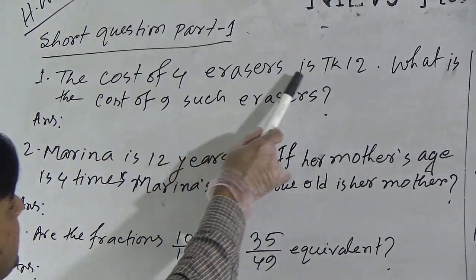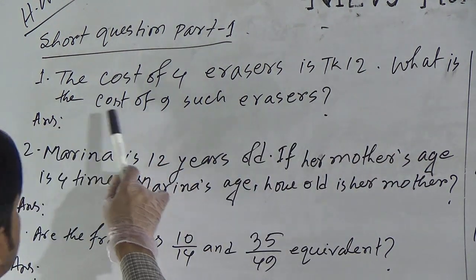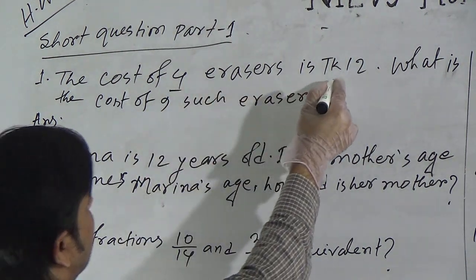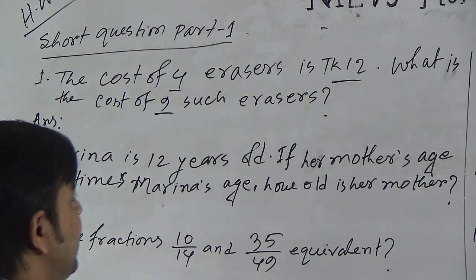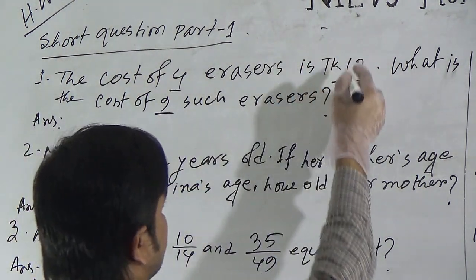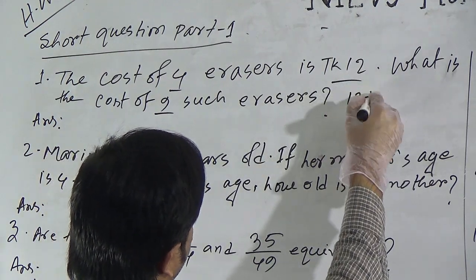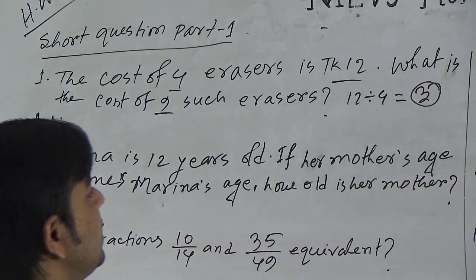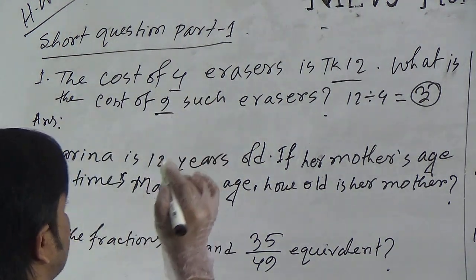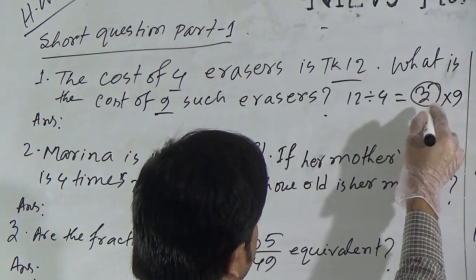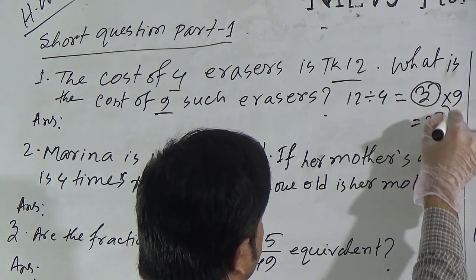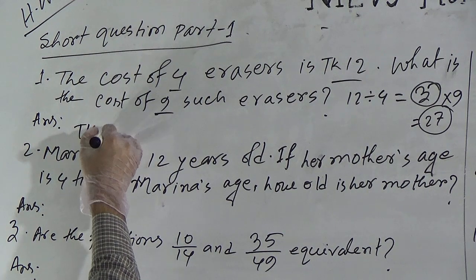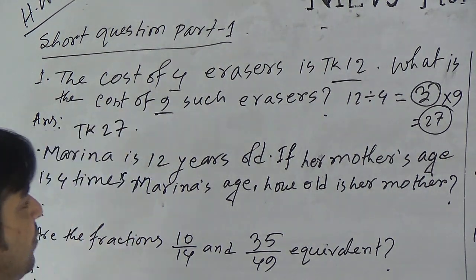Question 1: The cost of 4 erasers is taka 12. What is the cost of 9 such erasers? To find the cost of 9 erasers, at first we have to find the cost of 1 eraser. We divide 12 by 4, which gives 3. So the cost of 1 eraser is taka 3. To find the cost of 9 erasers, we multiply 3 by 9, giving 27. Our required answer for the first question is taka 27.